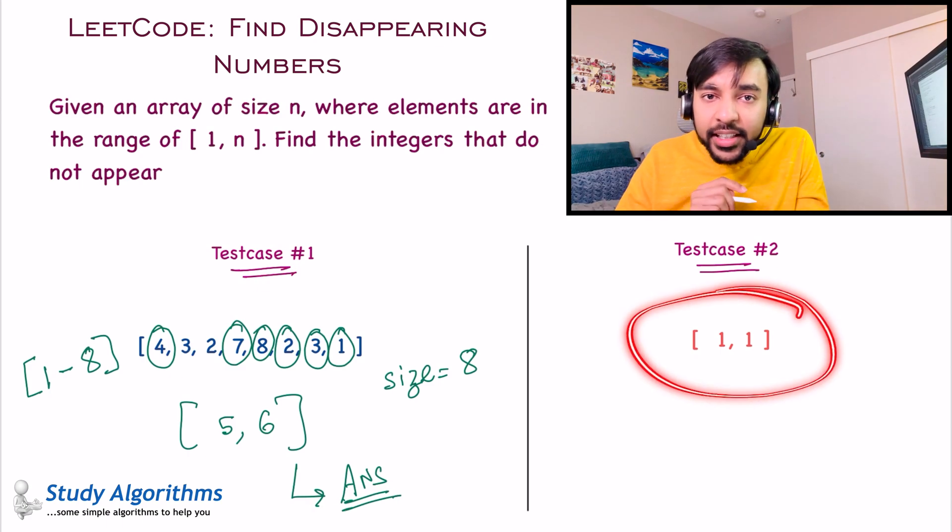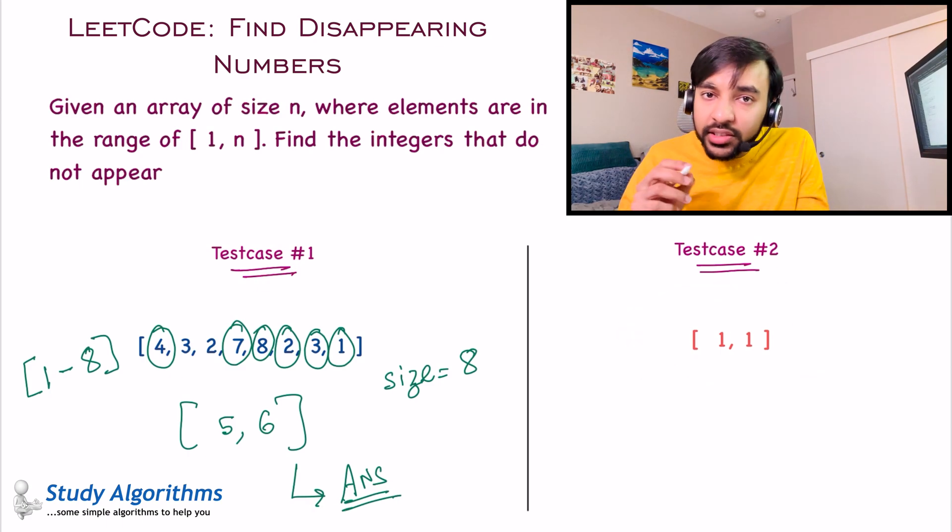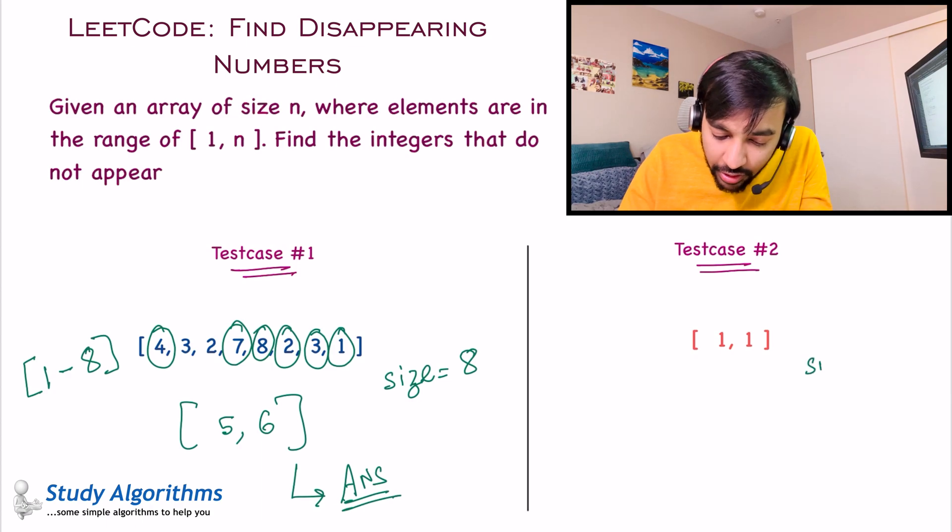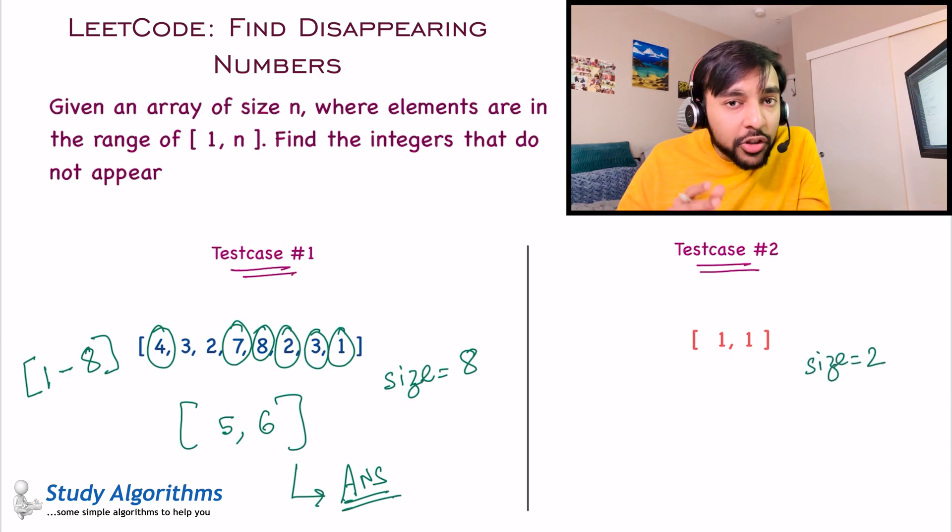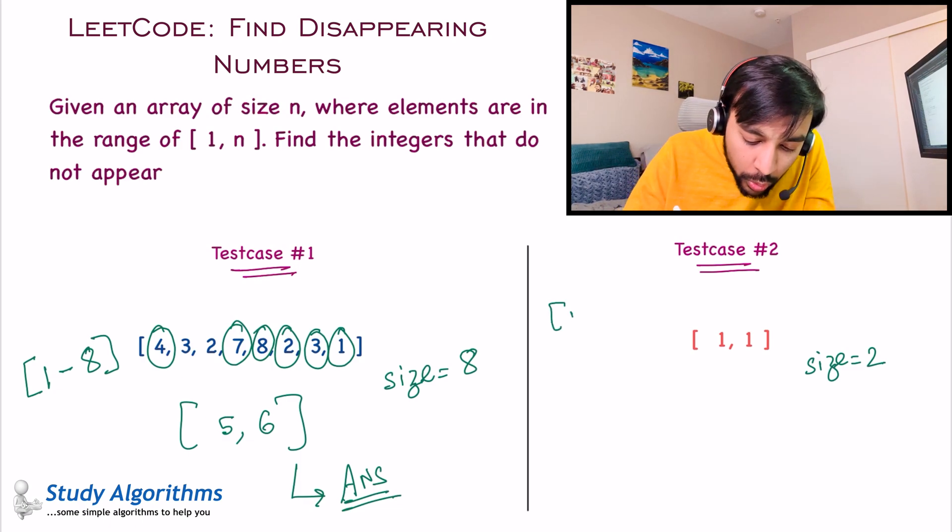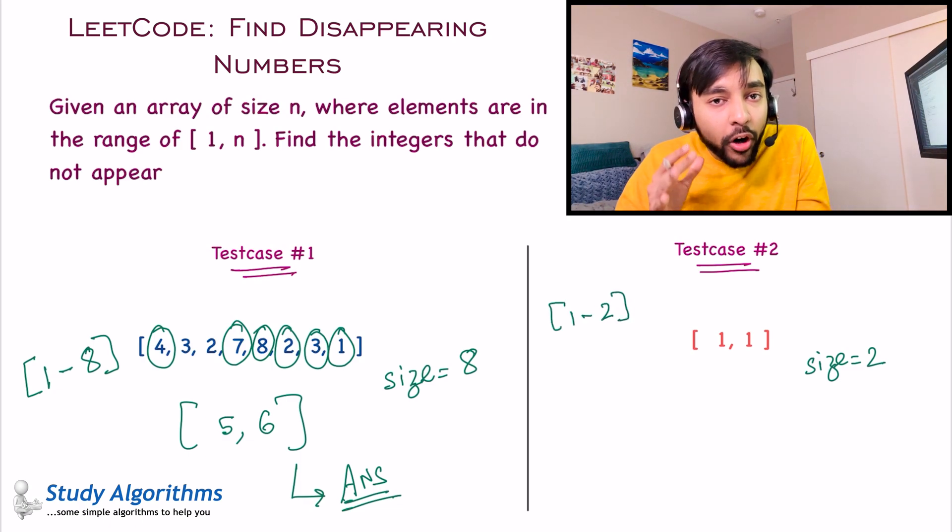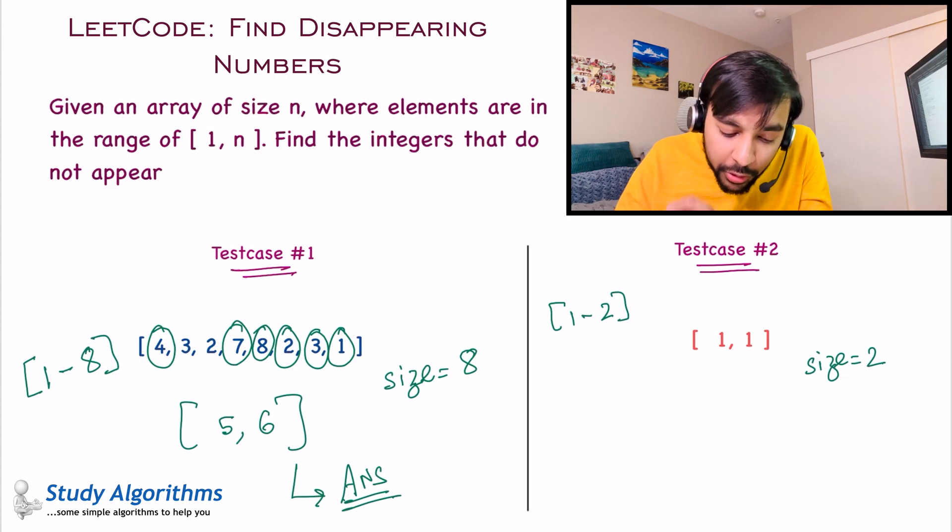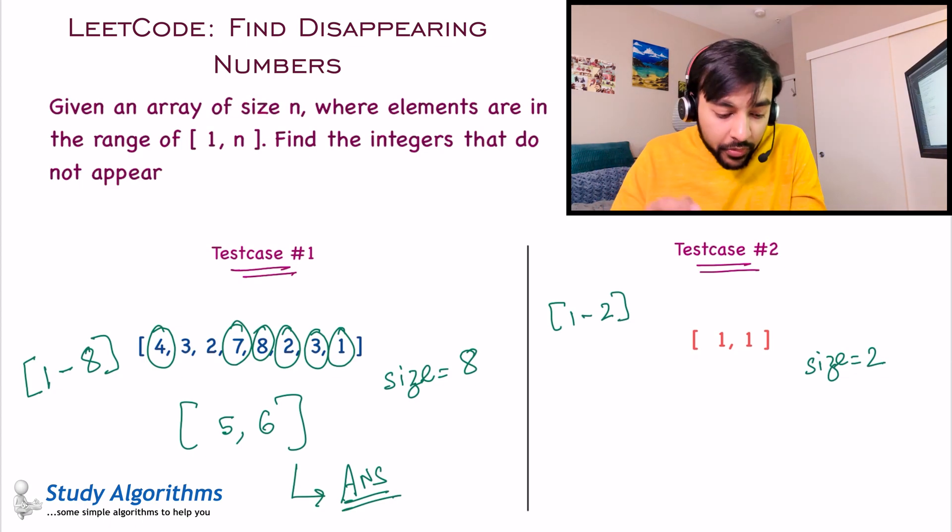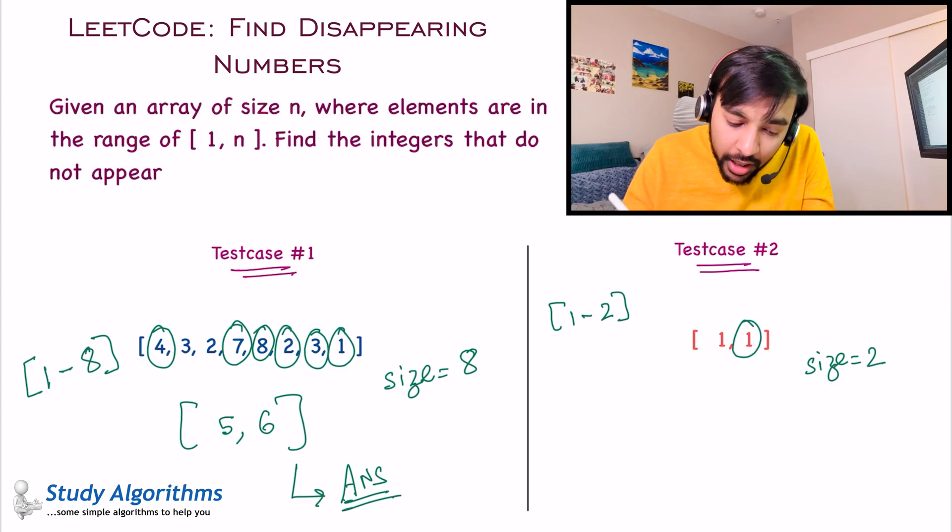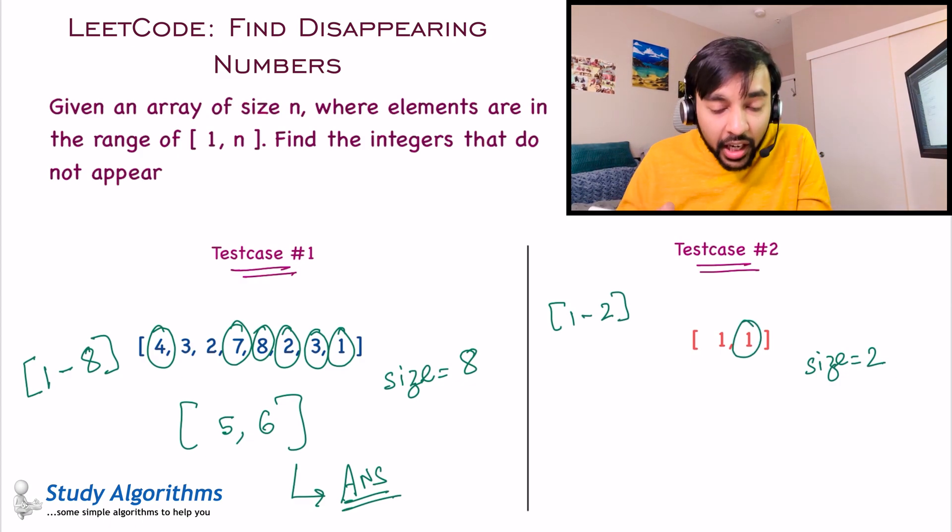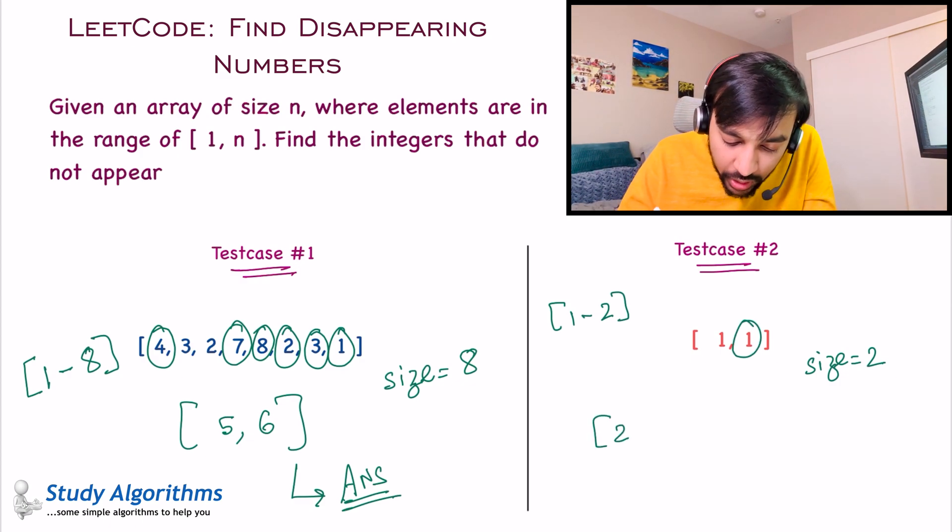Similarly, let's look at test case number 2. What is the size of the array? The size of the array is 2. That means this array should have elements from 1 to 2. Now, what are the disappearing numbers? You can start checking 1 and 2. You find a 1, but you cannot find a 2. And hence, 2 is the disappearing number. So in test case number 2, this will be your answer.